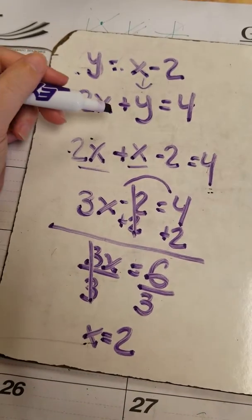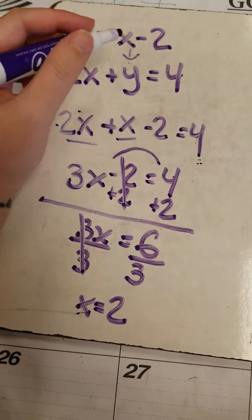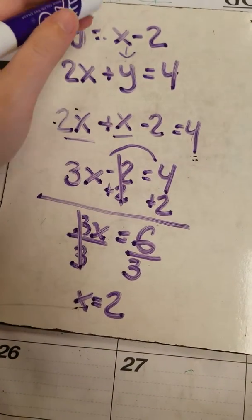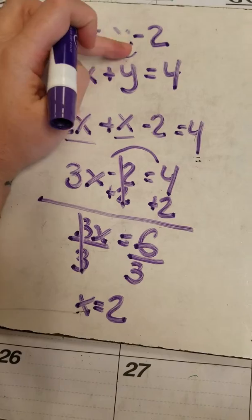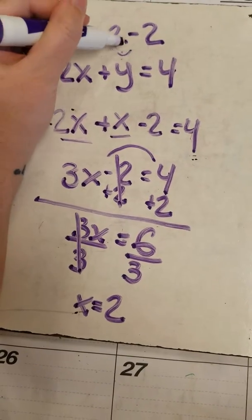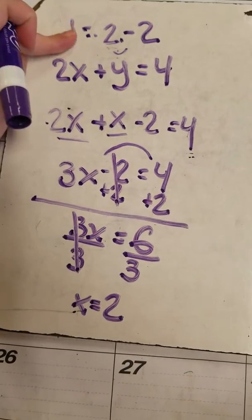That does not mean I'm done. I come back up here. If my x value is 2, I'm going to erase this and put the 2 that I figured out. 2 minus 2 is 0, so y equals 0.